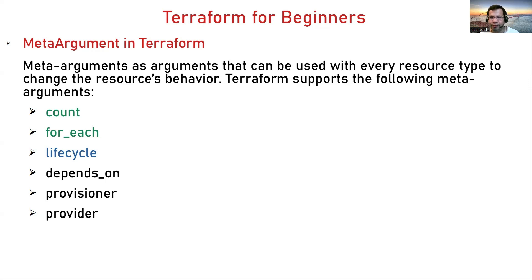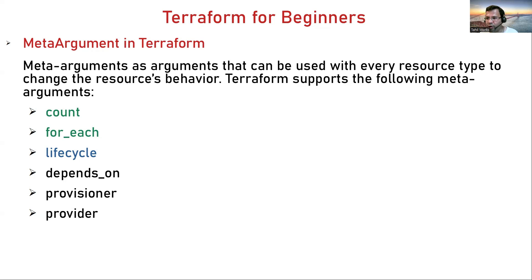A meta argument is an argument that can be used with every resource type to change the resource behavior, and Terraform supports multiple meta arguments. In our previous video, we talked about count — how count helps you avoid repeating your code. If you want to create multiple EC2 instances, you can specify count equals 2 or 3, and it will create the instances with the same configuration. For each helps us create dynamic configuration. Today we are going to talk about lifecycle.